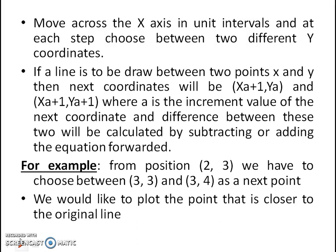We move across the x-axis in unit intervals and at each step of x, we choose between two different values of y coordinates. If a line is to be drawn between two points x and y, then the next coordinate will be (xk+1, yk) and (xk+1, yk+1), where k is the increment value of the next coordinate. The difference between these two will be calculated by subtracting or adding the equation used for the Bresenham Line Algorithm, helping us choose the next point where we plot the pixel.